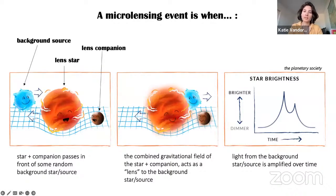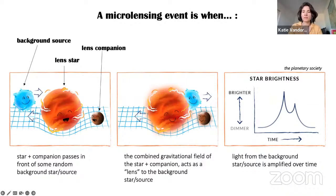The companion doesn't have to be a planet — it could be another star, or the lens might not have a companion at all. A lot of microlensing so far has focused on exoplanet detections, but since what we are detecting is the light from the background source being amplified by the lens system's gravity, the lens system can be anything: a main sequence star, an M dwarf, a white dwarf, a neutron star, a stellar black hole, or even a rogue planet. All it needs is mass and to be in the right place at the right time.